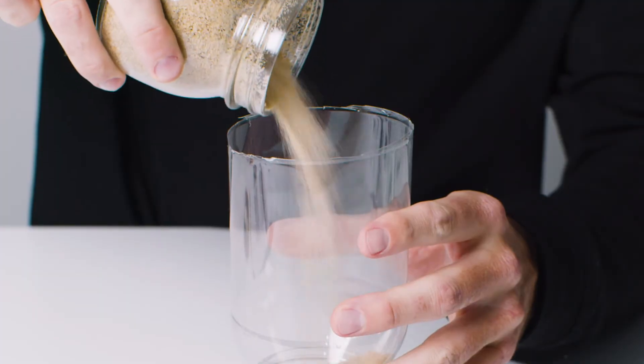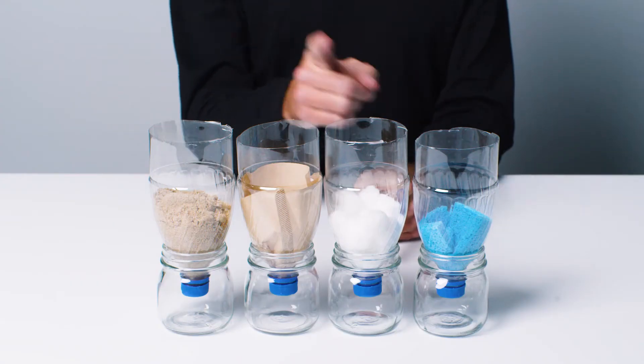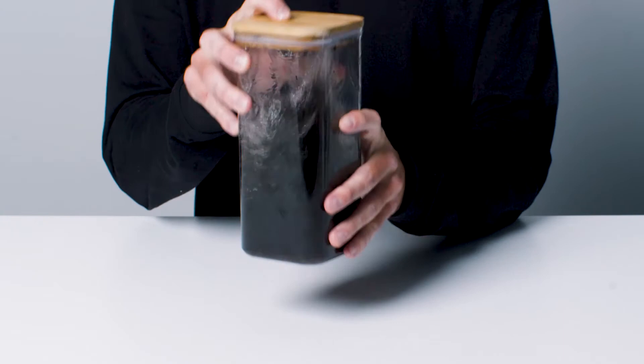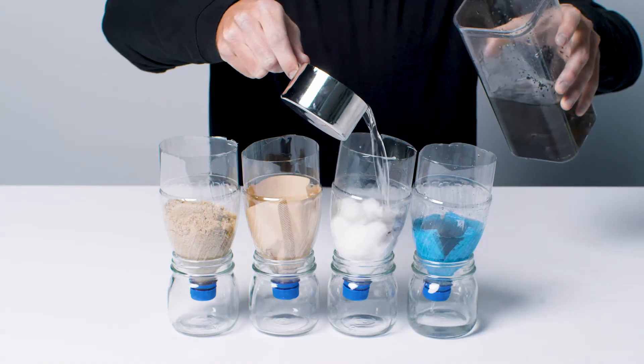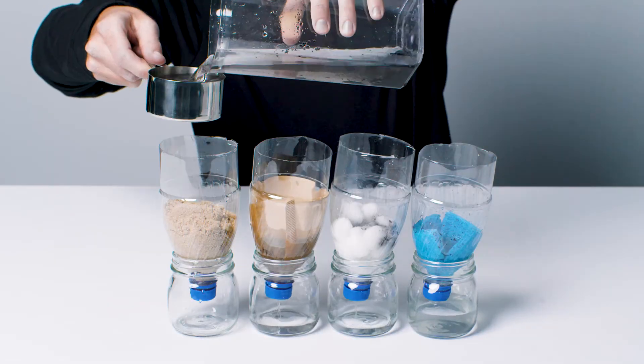Place one filter in each bottle so you can compare each sample. Shake your muddy water sample. Slowly pour one cup of muddy water into each of the filters. Save some muddy water for comparison later.